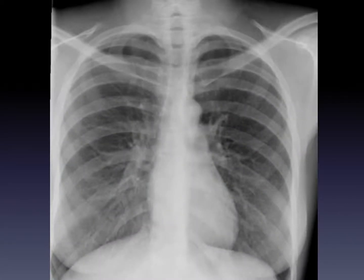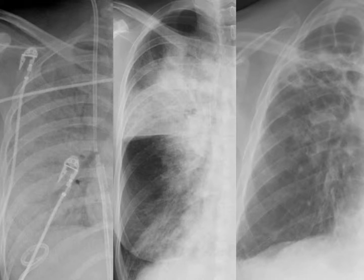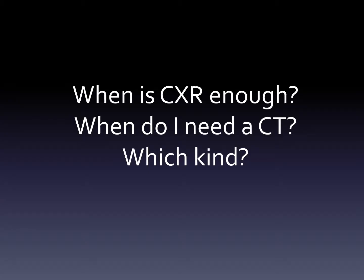The most common imaging of the chest is the chest radiograph. This is great to figure out if there's anything abnormal which can be visualized by this modality. But when the chest radiograph shows something abnormal, it starts becoming really difficult to figure out what's going on. There are different opacities and many diseases that could cause them. In difficult cases, or cases where only CT can show the abnormality, that's when we consider a chest CT.